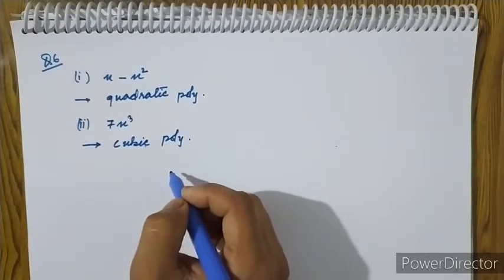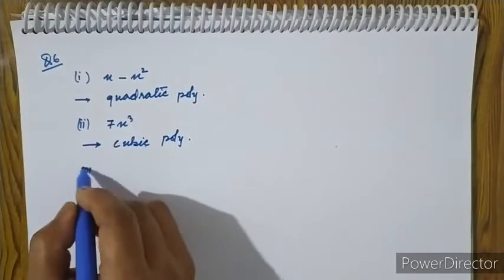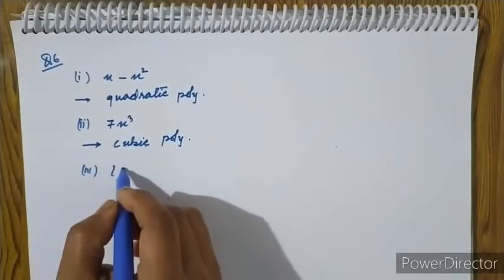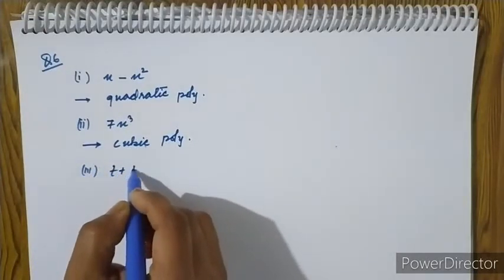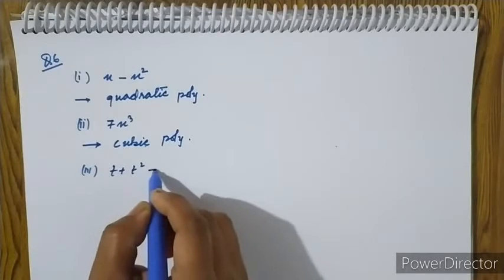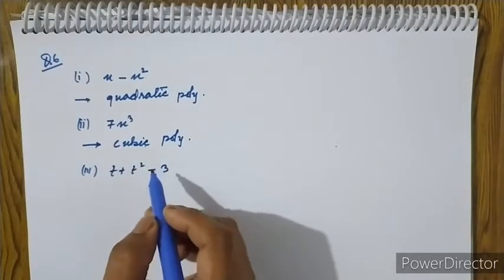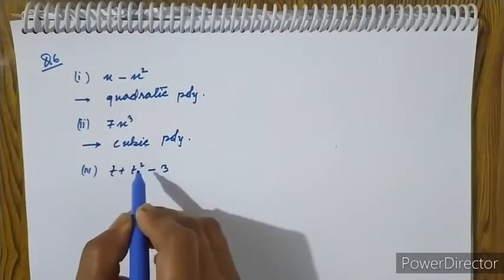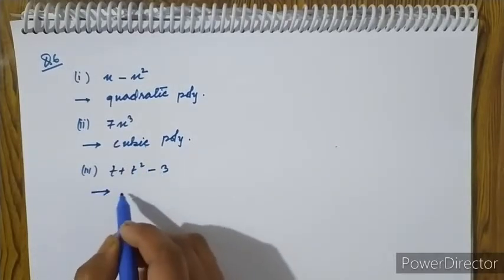Roman numeral 3: t plus t squared minus 3. The degree is 2, so this is a quadratic polynomial.